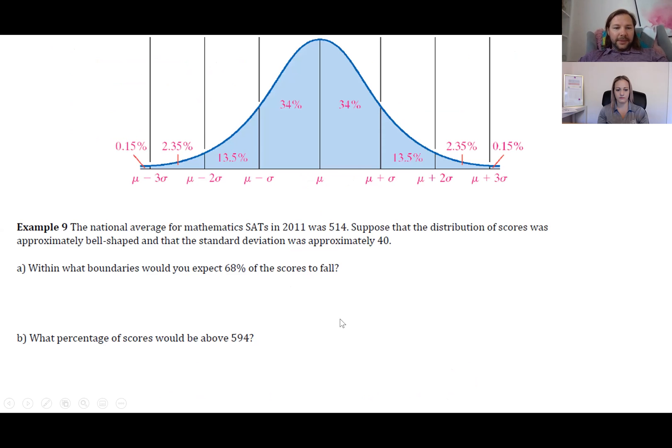For instance, the national average for mathematics SAT scores in 2011 was 514. Suppose that the distribution of scores was approximately bell-shaped and the standard deviation was approximately 40. Within what boundaries would you expect 68% of the scores to fall?